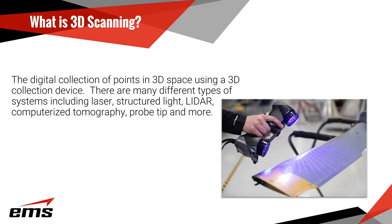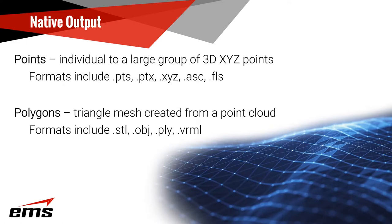3D scanning is really just the digital collection of points in 3D space using a 3D collection device. There are many different types of scanners including laser-based, structured light, LiDAR, CT, photogrammetry, probe tip, and many others. At the end of the day they all just collect points — some collect a few points, while others collect millions of points.